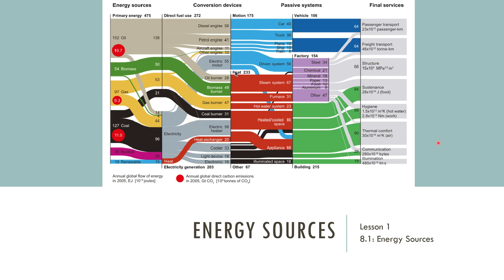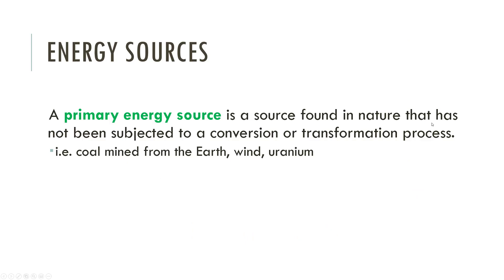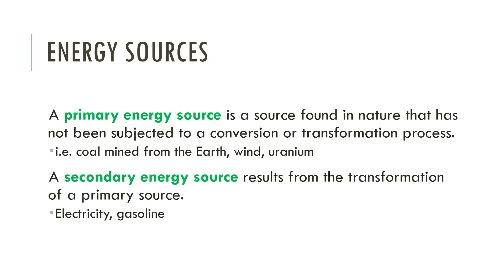There are two categories we use to discuss sources of energy. The first is a primary energy source — a source you find in nature with no conversion or refinement. For example, you can dig up a lump of coal, which is a primary energy source containing chemical energy. Wind is naturally occurring and delivers energy. Uranium can also basically be dug up — something that hasn't been converted.